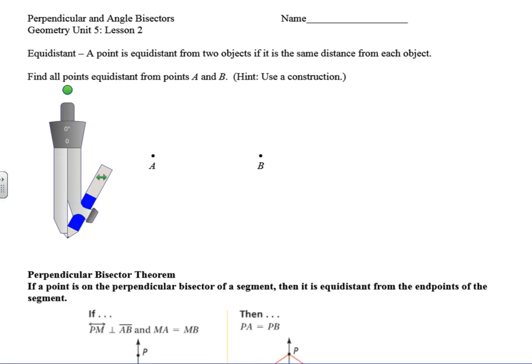Hello geometry students, Mr. Zazic back and better than ever here in Unit 5, Lesson 2. We're going to be looking at perpendicular and angle bisectors today and some relationships within triangles of those things. We want to figure out what relationships we can determine about those — that's the overarching question we want to answer.